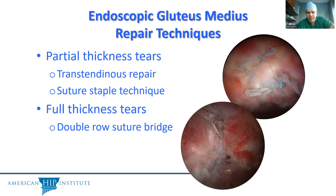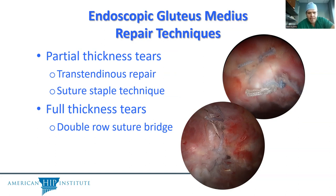Another way to treat partial thickness or non-retracted full thickness tears is endoscopically. This uses a 70-degree arthroscope, not inside the joint, but looking in the trochanteric region. You can identify the tear similarly to how you do open, but you get a better appreciation for partial thickness undersurface tears from the nature of arthroscopy. A double-row repair, providing an extra layer of reinforcement, is something that can be beneficial.